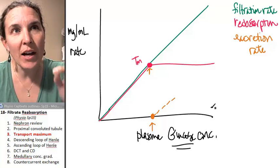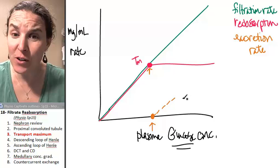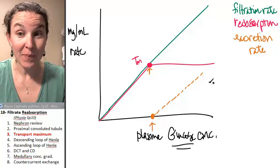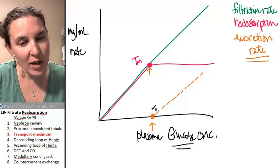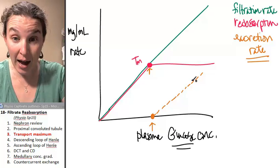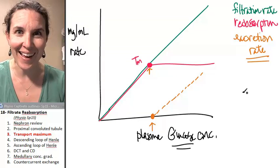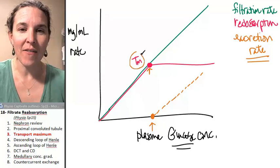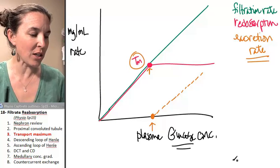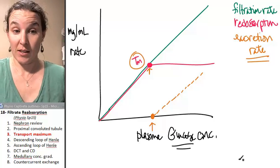We can't reabsorb that glucose so it stays in the filtrate. And if it stays in the filtrate, it will get peed out. We will excrete it. Once we hit transport maximum, the higher the plasma glucose concentration, the higher the excretion rate for glucose in our pee. It's all because of the number of transporters that we have. Again, glucose is just an example, but we could totally do this with many different solutes.